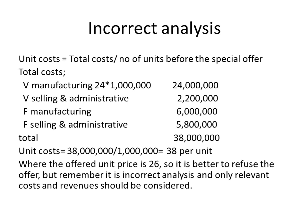Using traditional analysis, we calculate unit costs by dividing total costs by the total number of units produced before the special offer. Total costs include variable manufacturing costs, fixed manufacturing costs, variable selling and administrative costs, and fixed selling and administrative costs. Variable manufacturing costs: 24 × 1 million units = $24 million. Variable selling and administrative expenses: $2,200,000. Fixed manufacturing costs: $6,000,000. Fixed selling and administrative expenses: $5,800,000. Totaling $38 million.